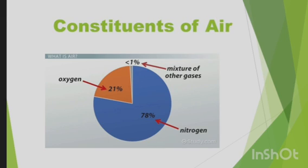Let's see, what are the constituents of air? The constituents of air are oxygen, nitrogen and a mixture of other gases. If you see this picture, you will see 21% is of oxygen. 1% is of other different gases. And 78%, that is the highest part, is nitrogen. However, there are several gases present in the air. In other words, air is a mixture of several gases.